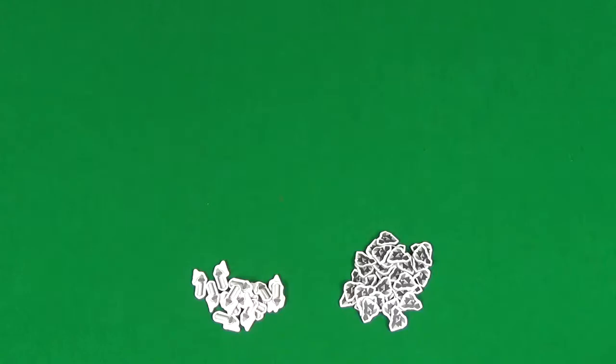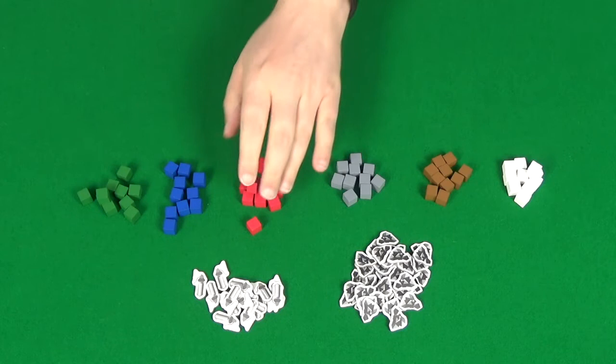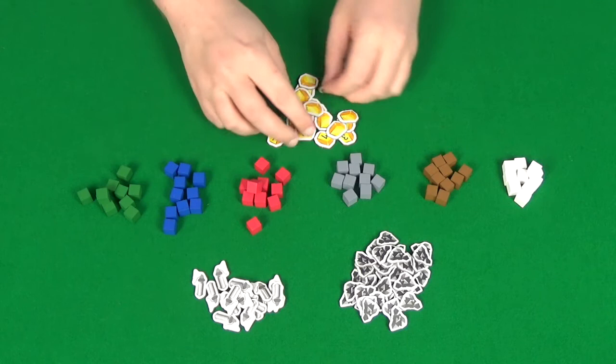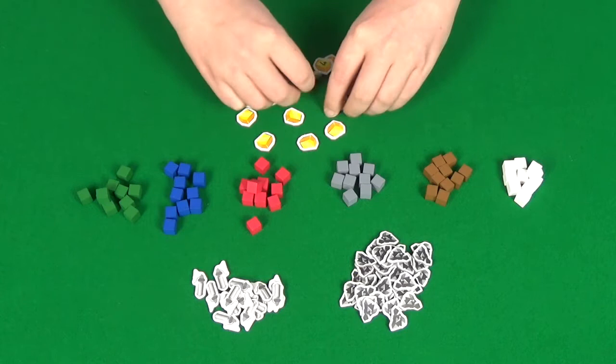Place two coal for each player on that space and then every space below that. Place the remaining coal and whistle tokens in piles next to the board. Make piles for your common resources and for your rare resources. Then also create a pile of your gold tokens, and you'll need to make sure that these are all flipped so that they're face down, and then you shuffle them all up so that you don't know what values are where.